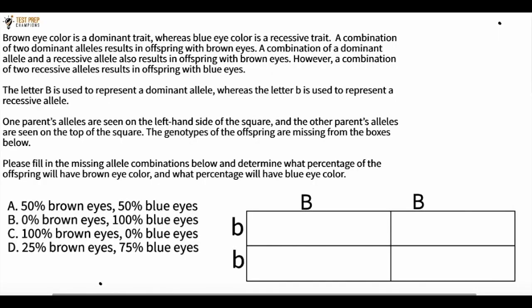Brown eye color is a dominant trait whereas blue eye color is a recessive trait. A combination of two dominant alleles results in offspring with brown eyes. A combination of a dominant allele and a recessive allele results in offspring with brown eyes.